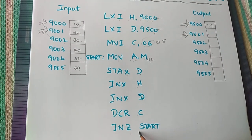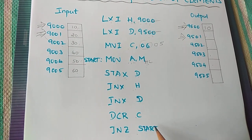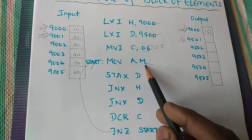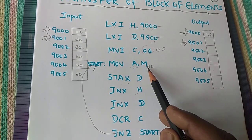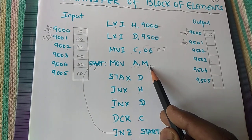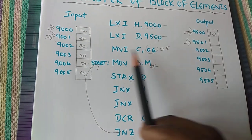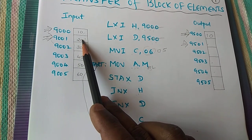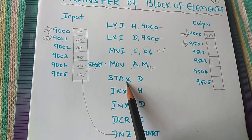Then jump to start. It means it will go back to start here. Means what? MOV A comma M means what? Memory location pointed by HL pair. HL pair contains 9001. So that is 20, so that will be moved to accumulator.